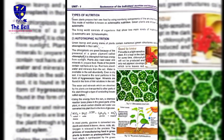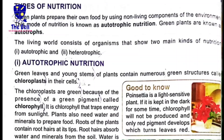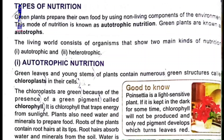In this section, we will study about types of nutrition. There are two main types of nutrition: autotrophic nutrition and heterotrophic nutrition.